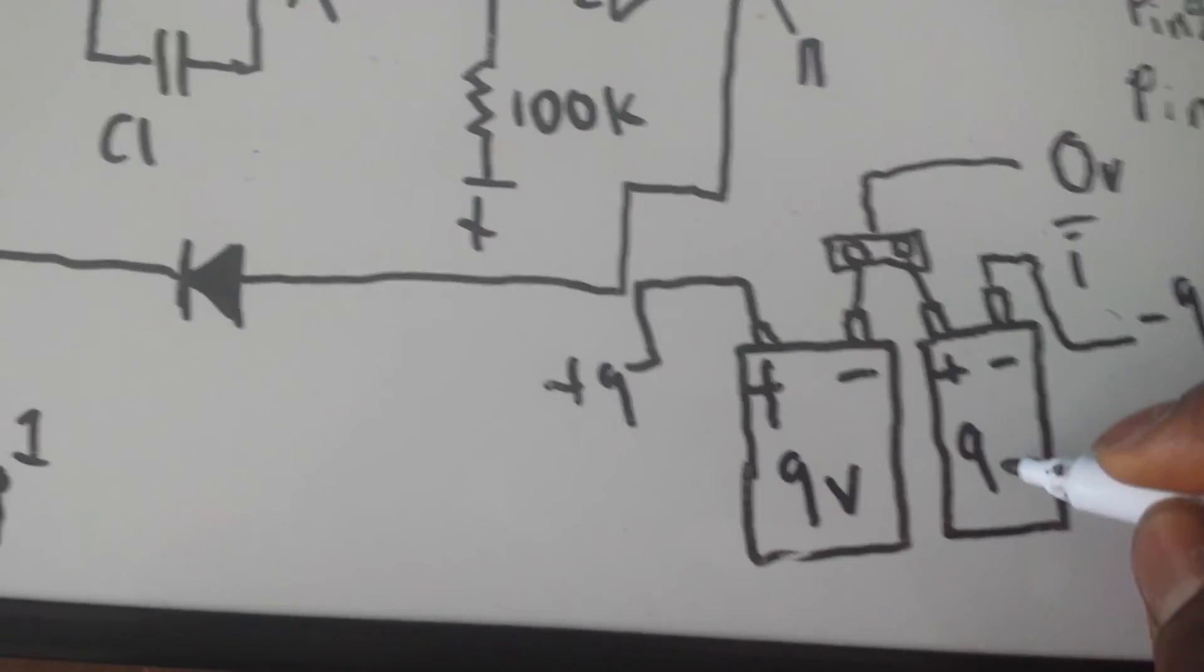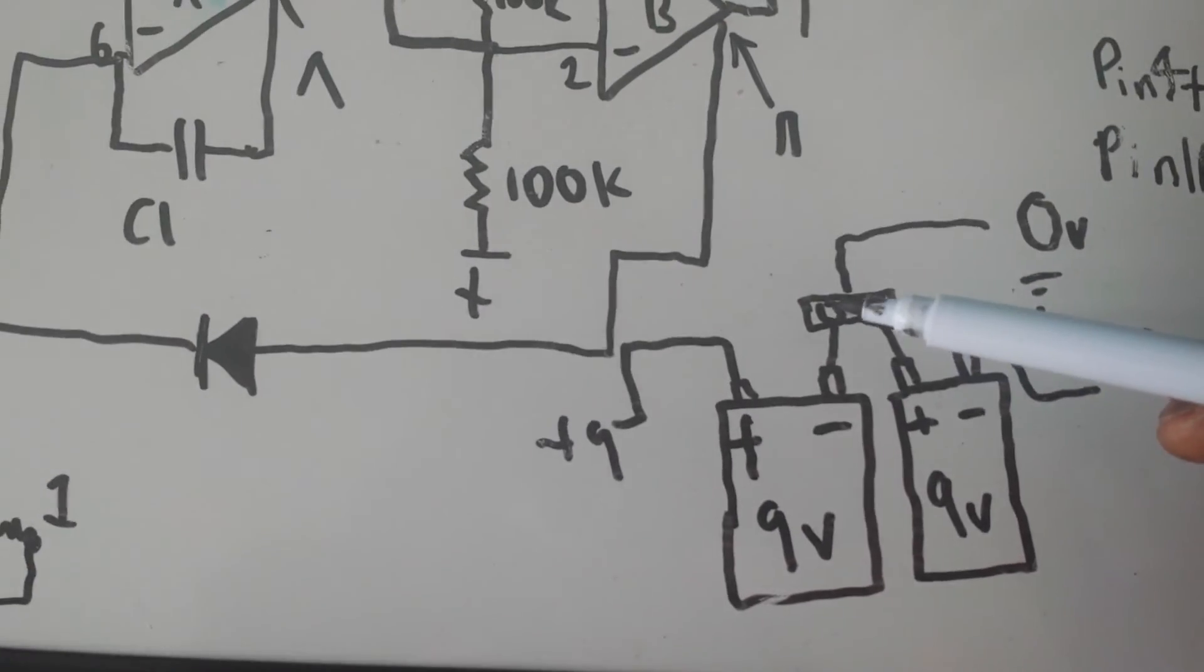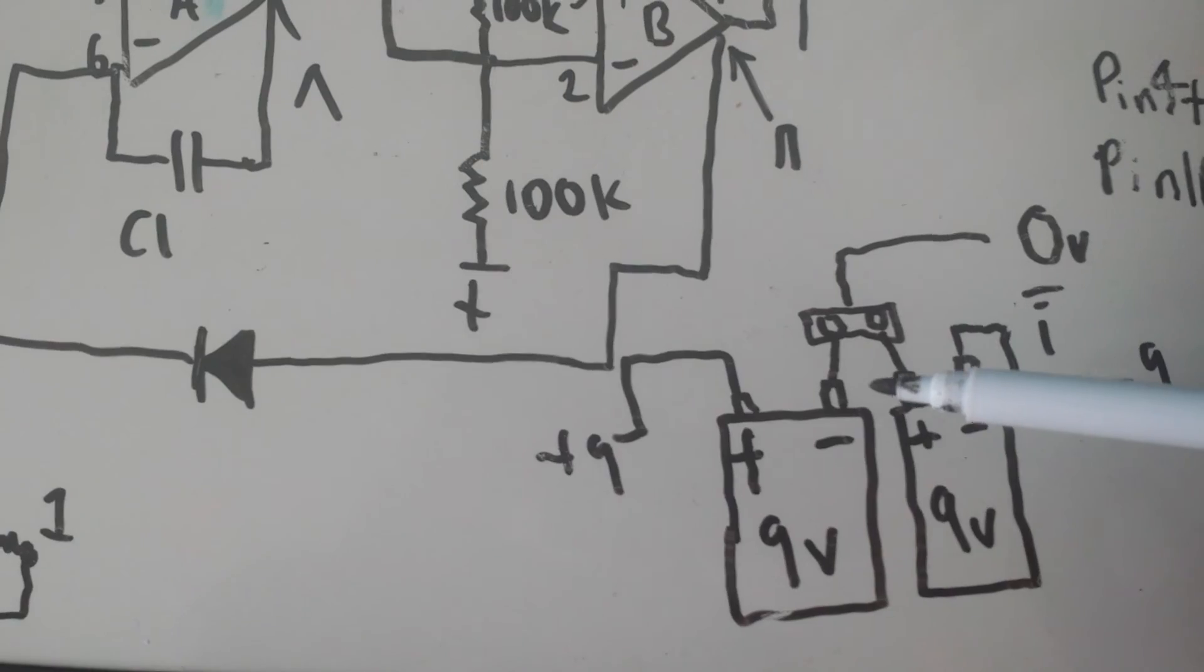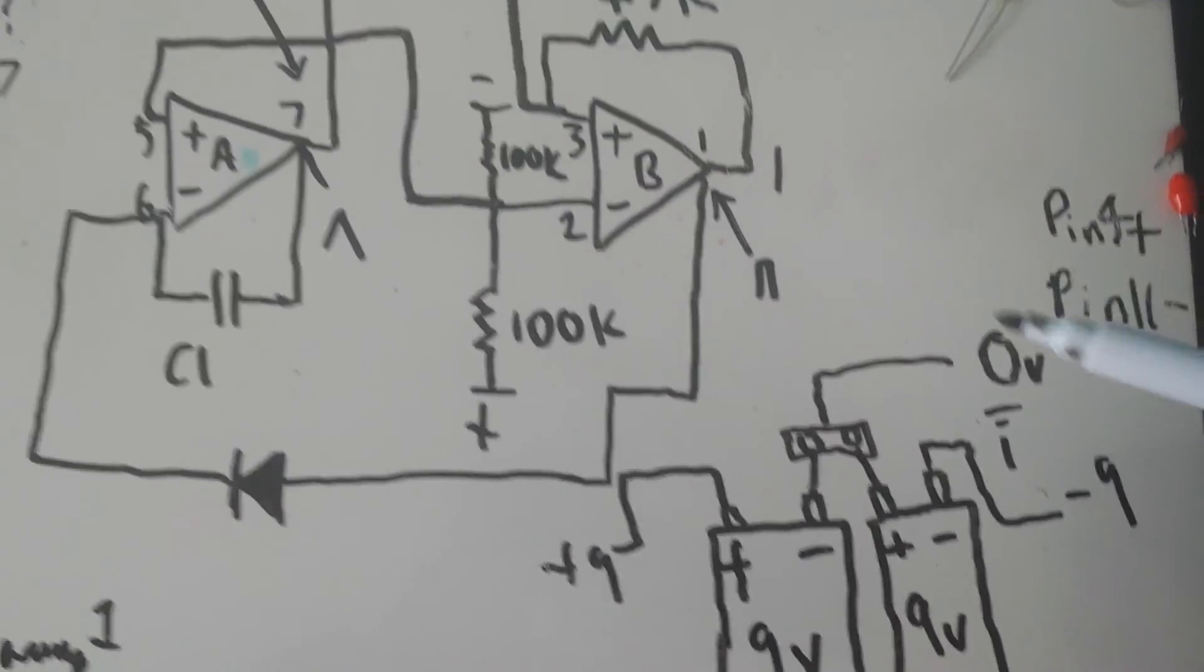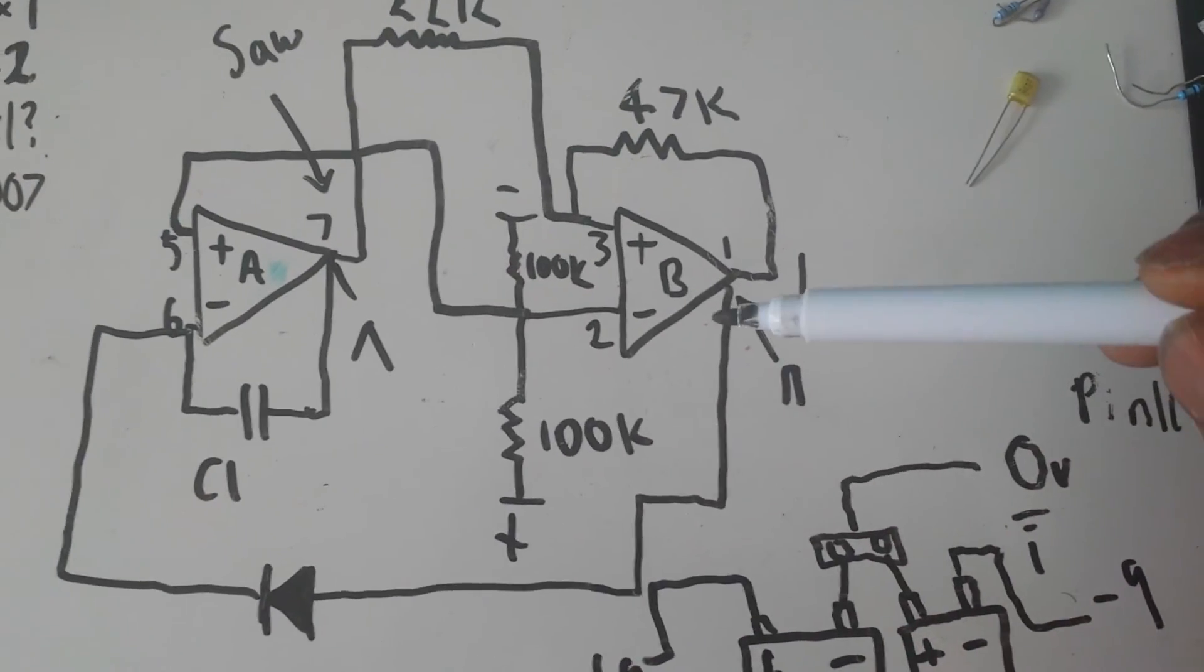We have our bipolar power supply there. We connect two positive and negative together, give us zero volts, and this will give us plus nine and we have minus nine to power these dual op-amps.